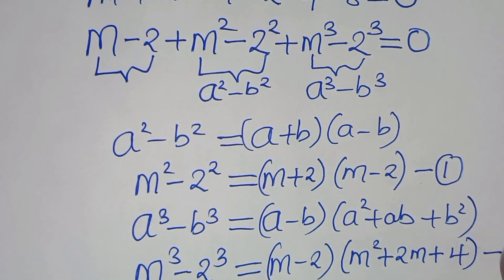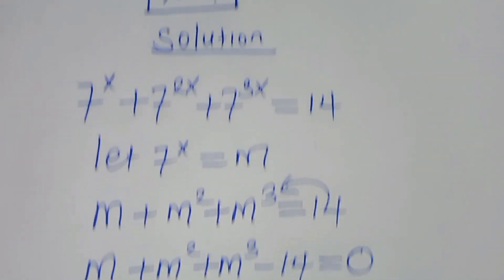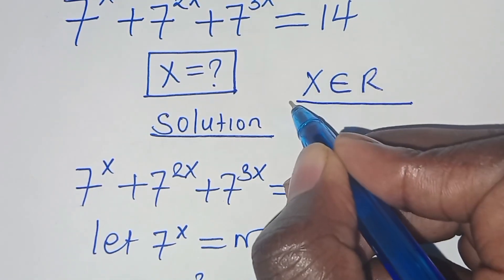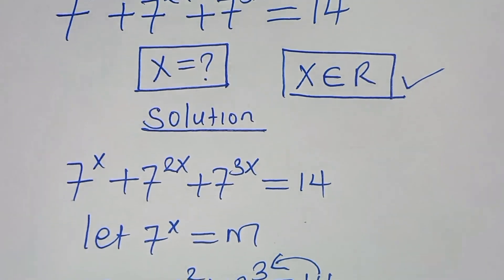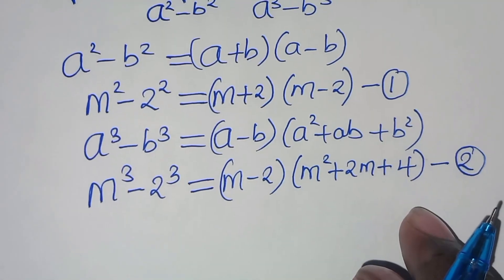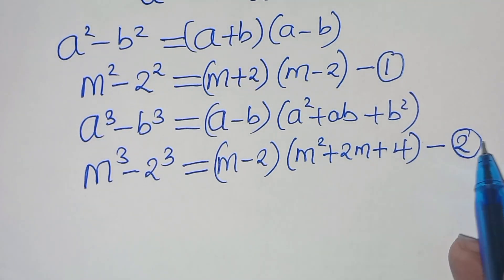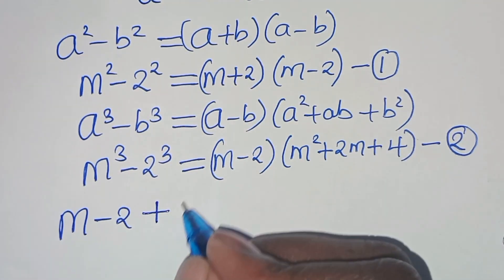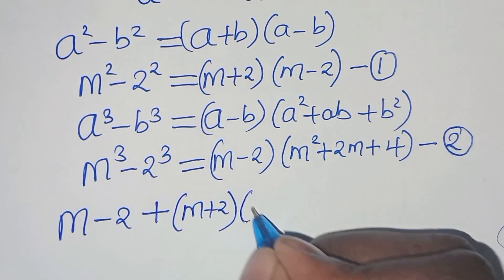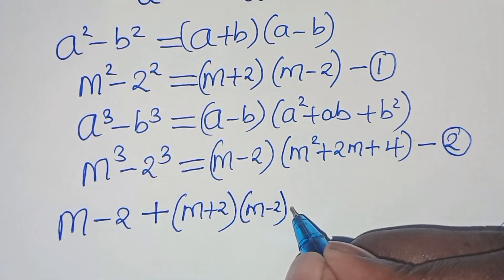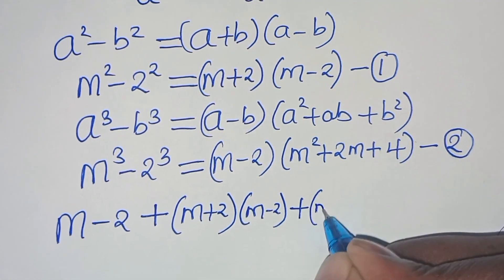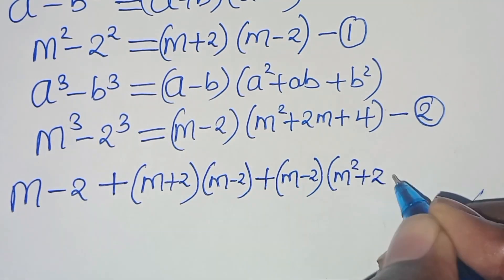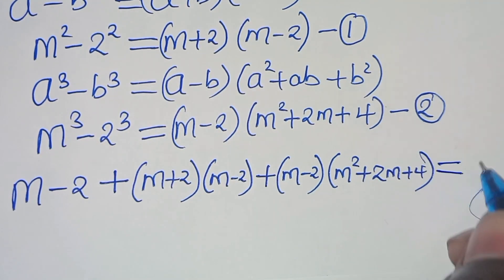Something to note: x is a member of the real numbers. Now let's combine equations 1 and 2. We have (m minus 2) plus (m plus 2)(m minus 2) plus (m minus 2)(m squared plus 2m plus 4), and this equals 0.